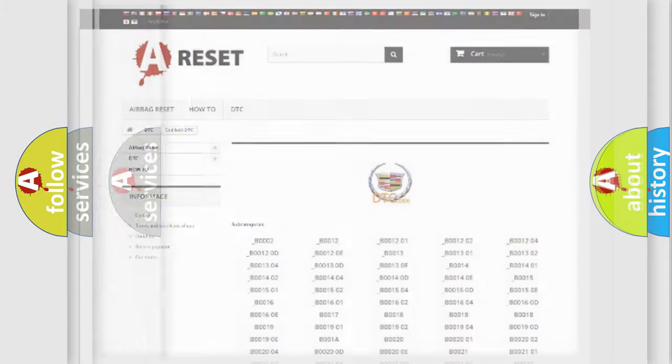Our website airbagreset.sk produces useful videos for you. You do not have to go through the OBD2 protocol anymore to know how to troubleshoot any car breakdown. You will find all the diagnostic codes that can be diagnosed in Cadillac vehicles, and also many other useful things.